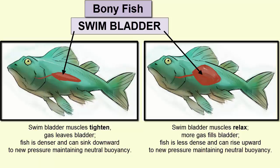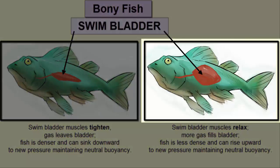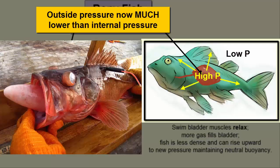The only real drawback to the swim bladder is that descents and ascents must happen slowly to give the fish time to re-equilibrate pressures in their bladders to match those outside. If they ascend too quickly — such as when caught on a fishing line — their internal bladders will end up at much higher pressure than the outside environment, and the bladder will push outward and upward through the mouth, killing the fish.